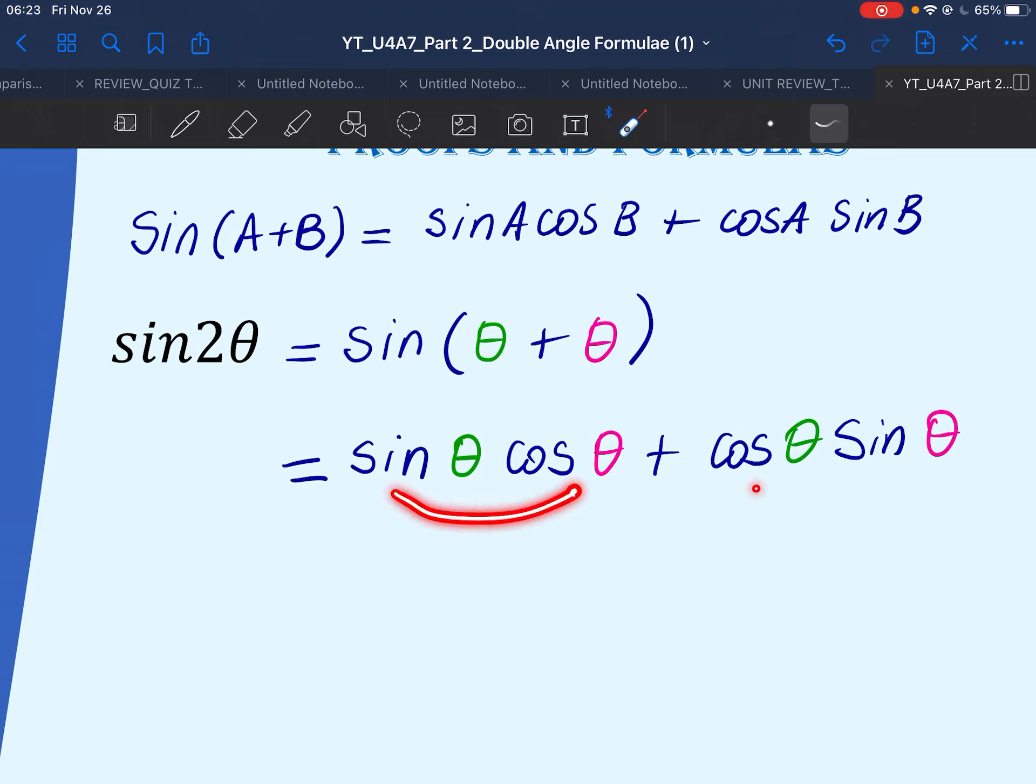As you can see, these two are like terms. So we'll say that we have 2 sine theta cos theta.